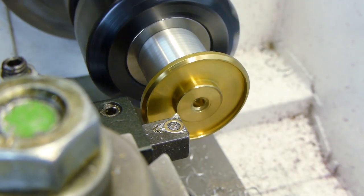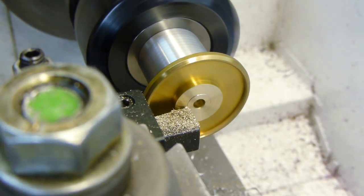I reduced the central boss so that it would be a nice fit with the recess on the barrel holder, and trimmed off the outer rim.